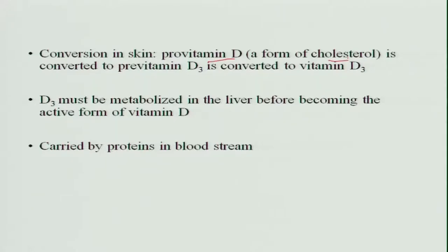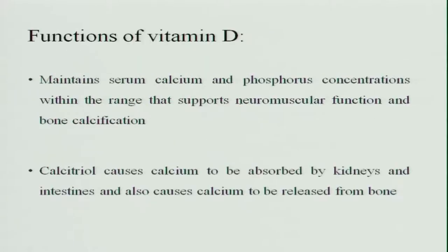D3 must be metabolized in the liver before coming into an active form of vitamin D. This vitamin D is carried by proteins into the bloodstream. The functions of vitamin D include maintaining the serum calcium and phosphorus concentration in the blood within range, and supporting neuromuscular function and bone calcification.